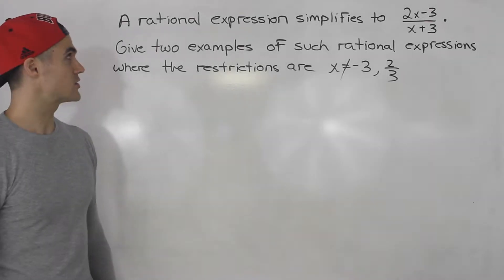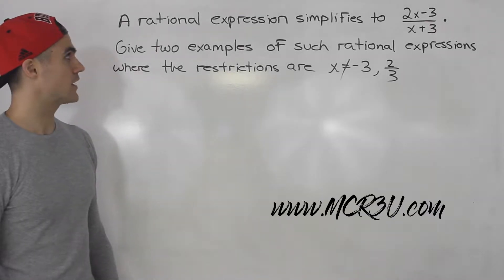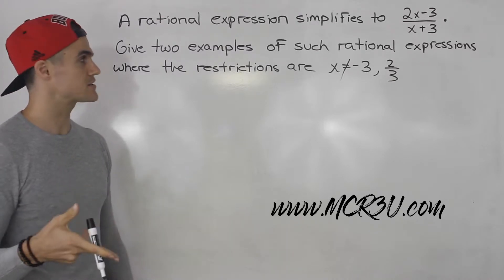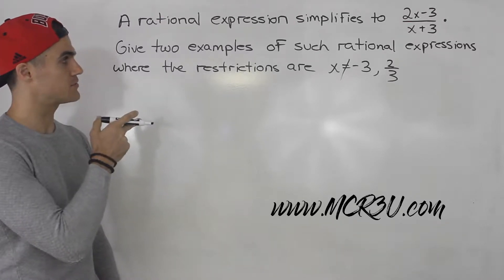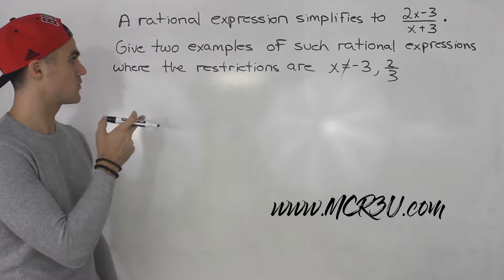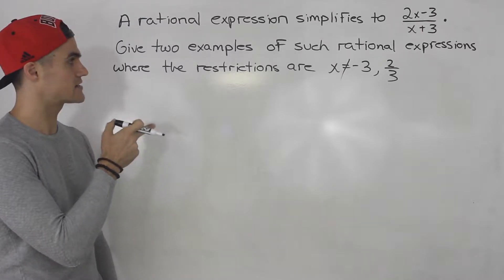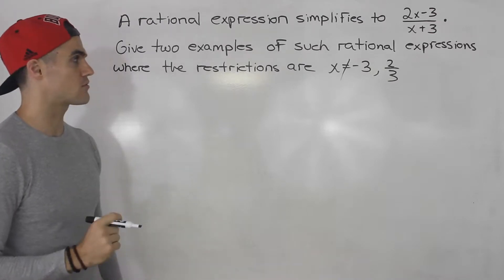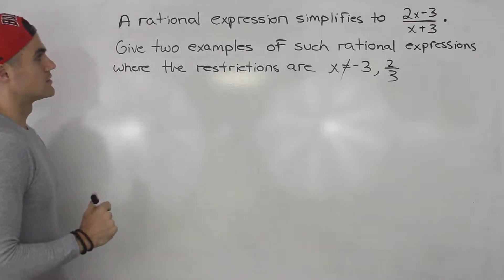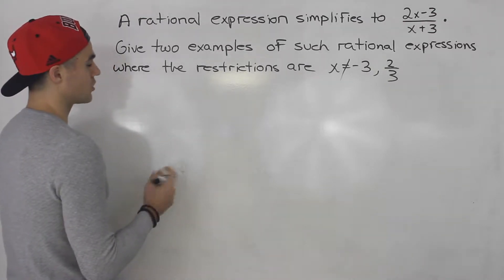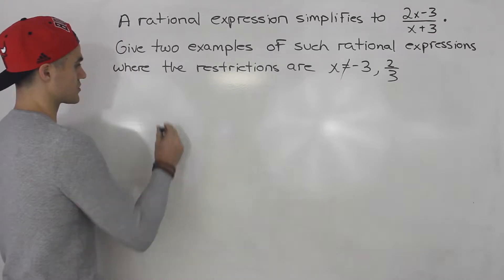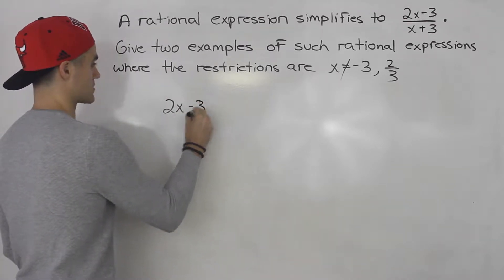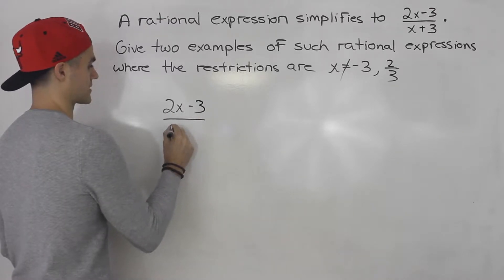Welcome back everybody. In this question, we're told that a rational expression simplifies to 2x minus 3 over x plus 3. We have to give two examples of such rational expressions where the restrictions are x cannot equal negative 3 and x cannot equal 2 over 3.